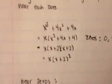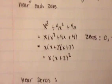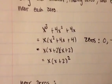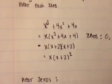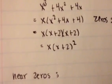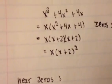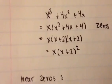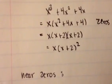You'd first start off by taking an x out of the original function. You get x times x squared plus 4x plus 4, and then x times x plus 2 times x plus 2, which is the factored form of that, and that would be x times x plus 2 squared.